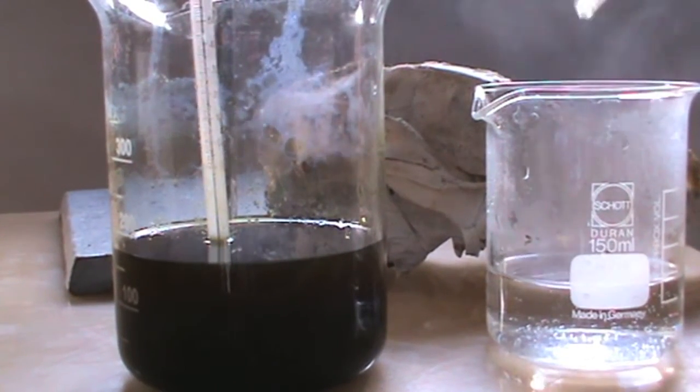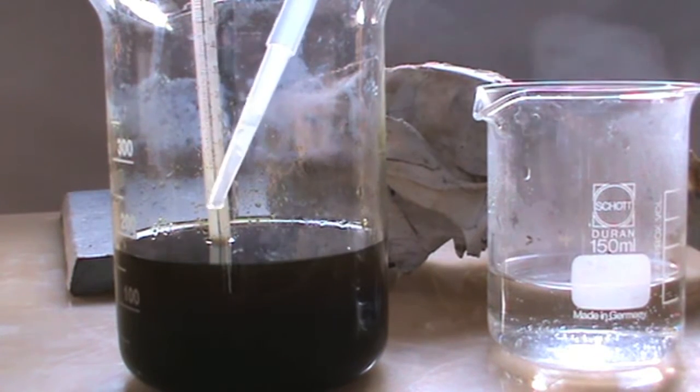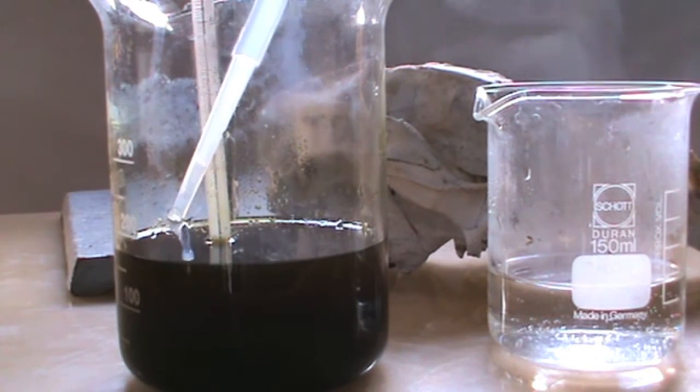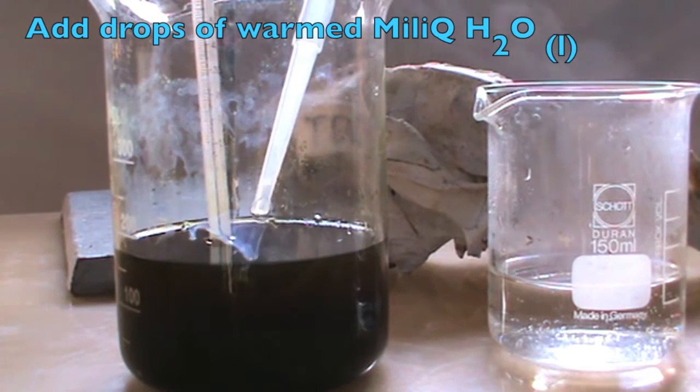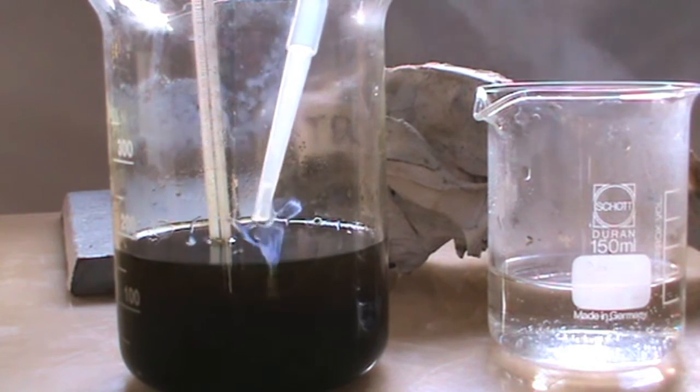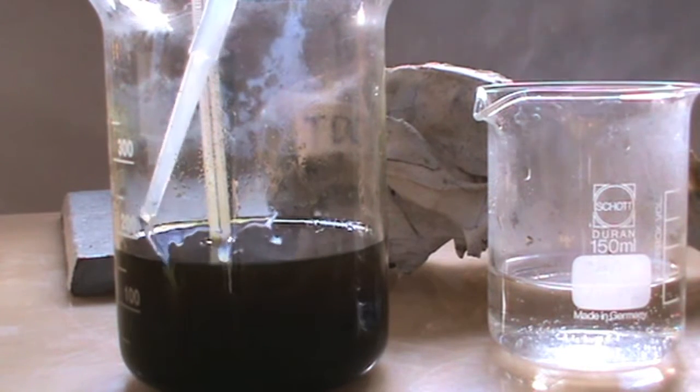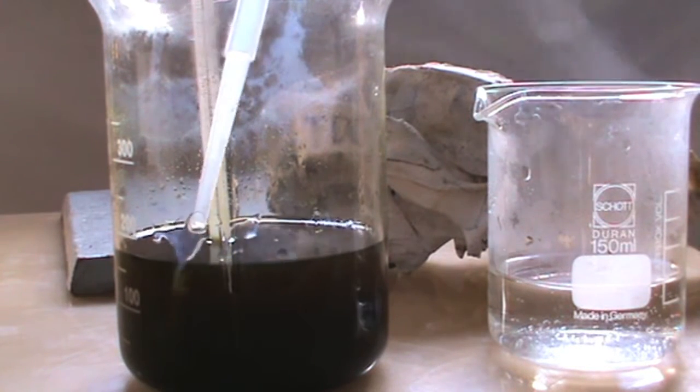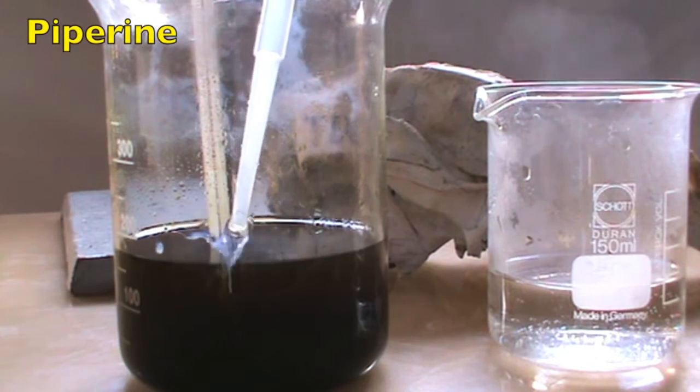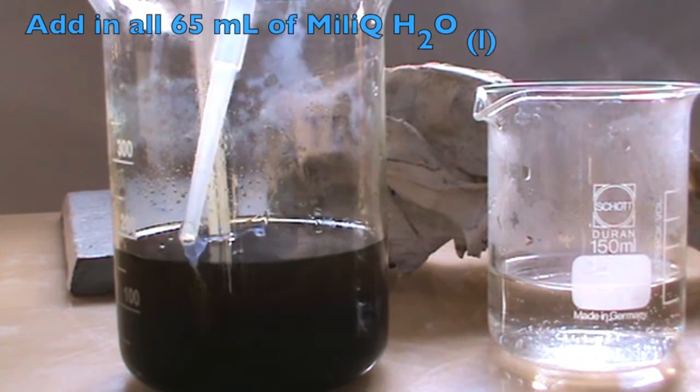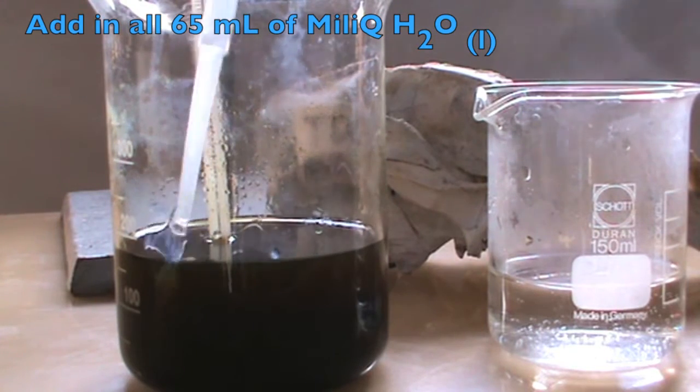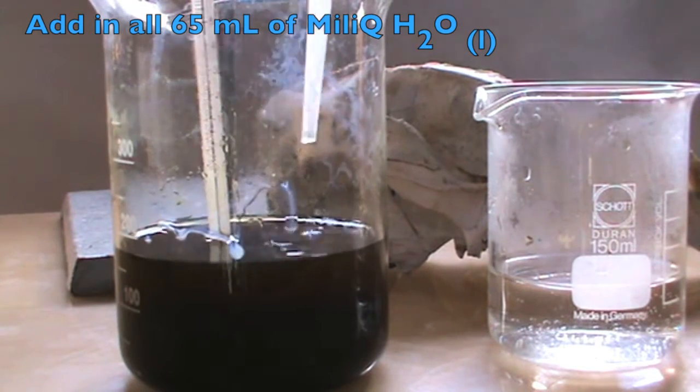Once the desired temperature is reached, take the two beakers off the hot plate and slowly using a pipette, add drops of the warmed millipore water. Upon addition of the water, a murky white precipitate is formed and can be seen trickling down on the side of the beaker. This is our product, piperine. Be sure to add in all of the warmed 65 ml millipore water, drop-wise.